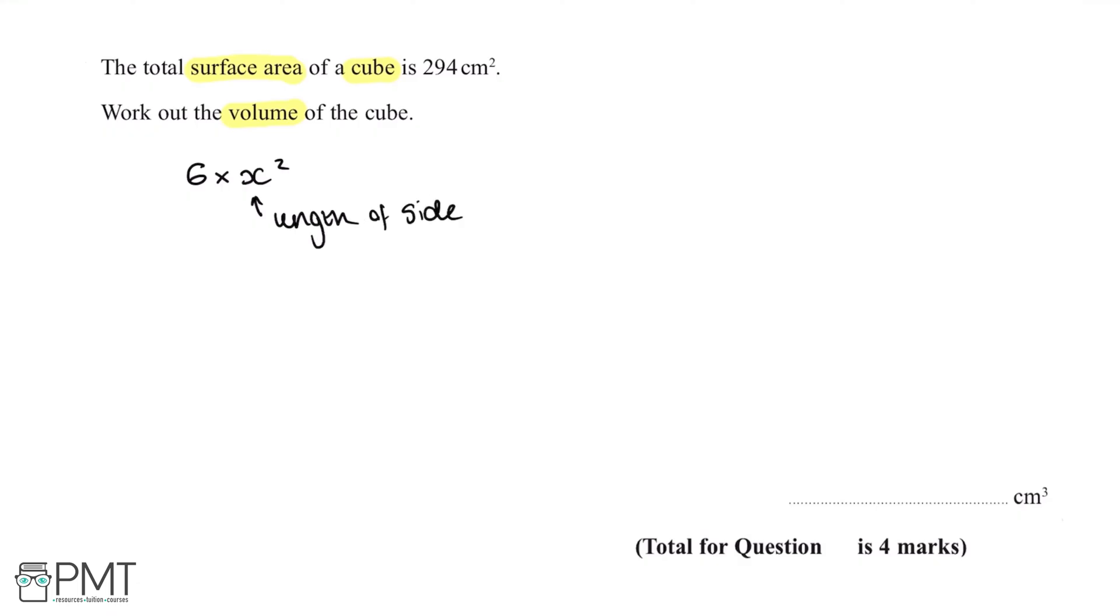We want to work out what one of these individual sides is equal to. So we can write that 6x² equals 294, as 294 is equal to the surface area of this cube.